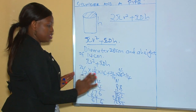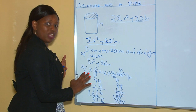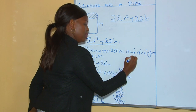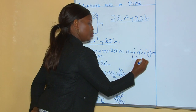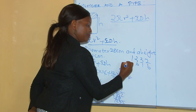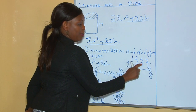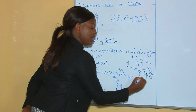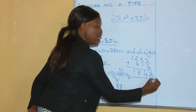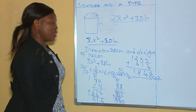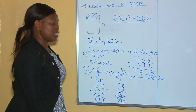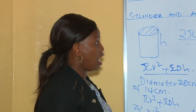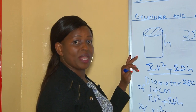Now we put them together: the area of the one circle plus the area of the curved surface, which is 1232 + 616. Adding: 2+6=8, 3+1=4, 2+6=8, bring down the 1, giving 1848. Therefore the surface area of the open cylinder is 1848 square centimeters — the area of one circle plus the curved surface.